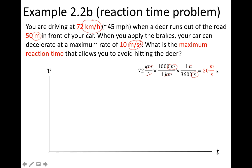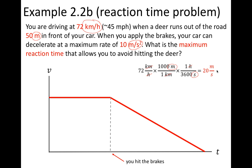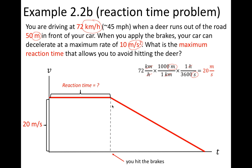If we make a velocity versus time graph, we can graph this motion. For some period of time we travel at 20 meters per second, then we hit the brakes and slow the car down, hopefully reaching zero before hitting the deer. We want to find the reaction time, which is the base or width of the rectangle on the graph — the time from when we see the deer until we hit the brakes. The height of that rectangle is 20 meters per second.